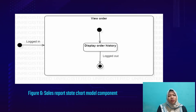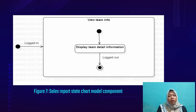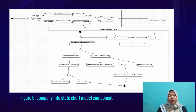Figure 6 shows the order state chart model component — the administrator can view order history. Figure 7 shows the team state chart model component — the administrator can view detailed team information such as name and role, for example stockist or agent. Figure 8 shows the company info state chart model component.